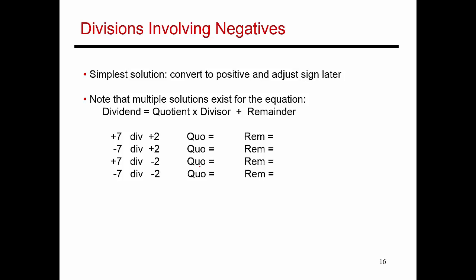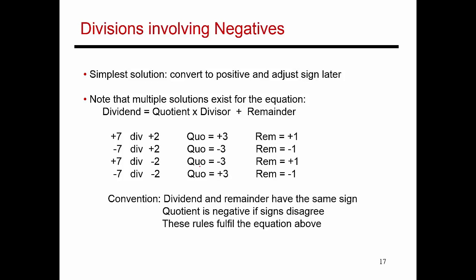So here are a few examples. If I'm dividing 7 by 2, those answers are pretty clear. The quotient is 3, remainder is 1. If I'm dividing minus 7 by plus 2, one possible answer is to have a quotient of minus 3 and a remainder of minus 1. But you could also have a quotient of minus 4 and a remainder of plus 1. So there are many options when at least one of the numbers is negative.